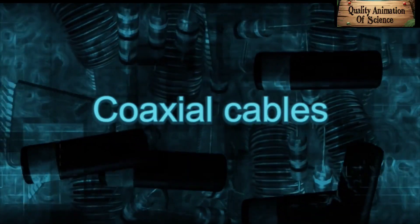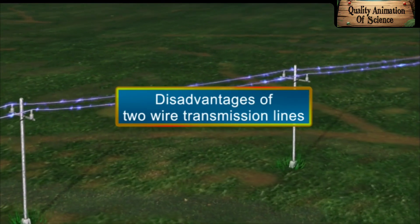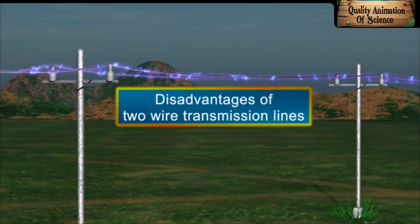Coaxial Cables. There are two disadvantages associated with the use of two-wire transmission lines.